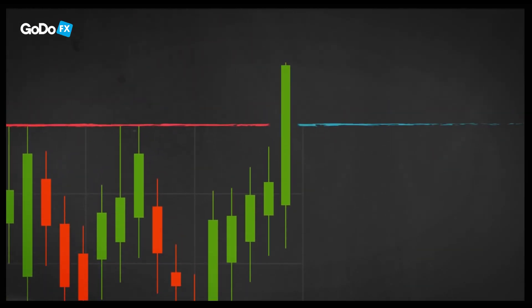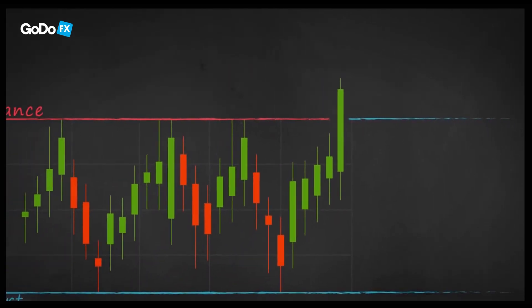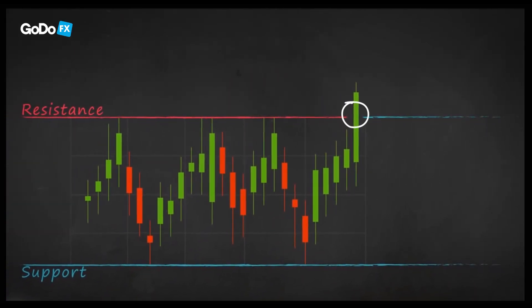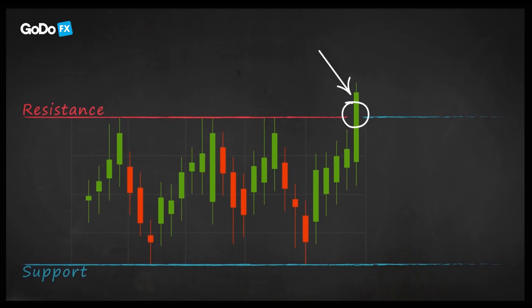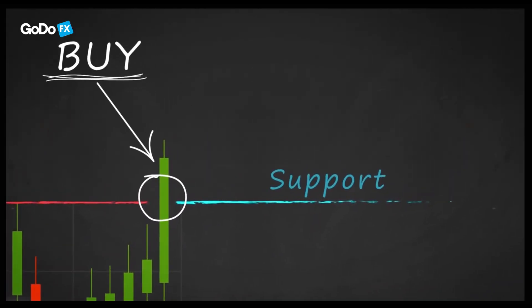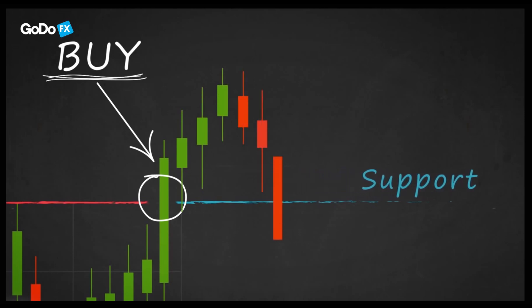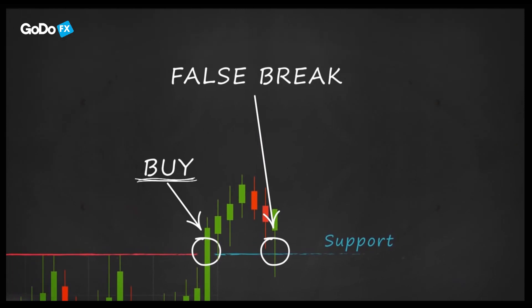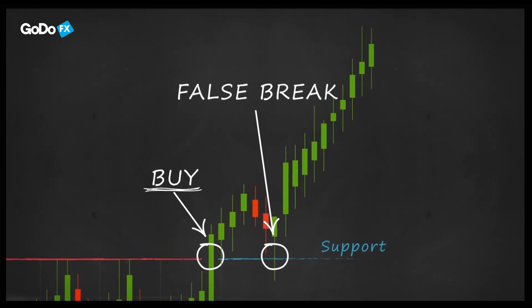Once the price breaks through the top line, it's most likely to keep its upward direction. If the candle finishes its movement above the resistance line, it's time for you to buy. In this very moment, the resistance line becomes a support line — a clear signal that the price is going up. Don't panic if the price drops for a few moments; it's only a false break, and the price will certainly rise again.